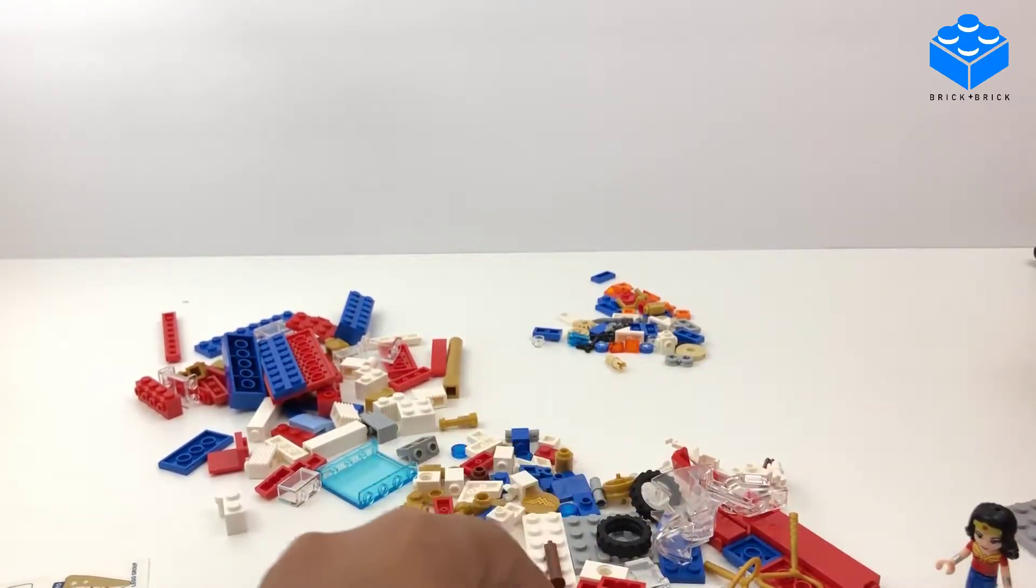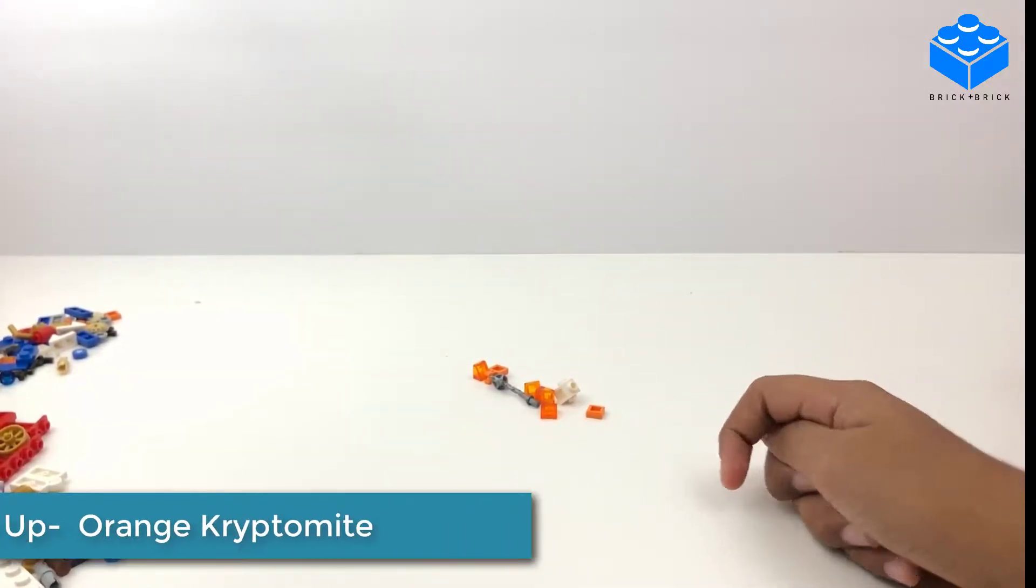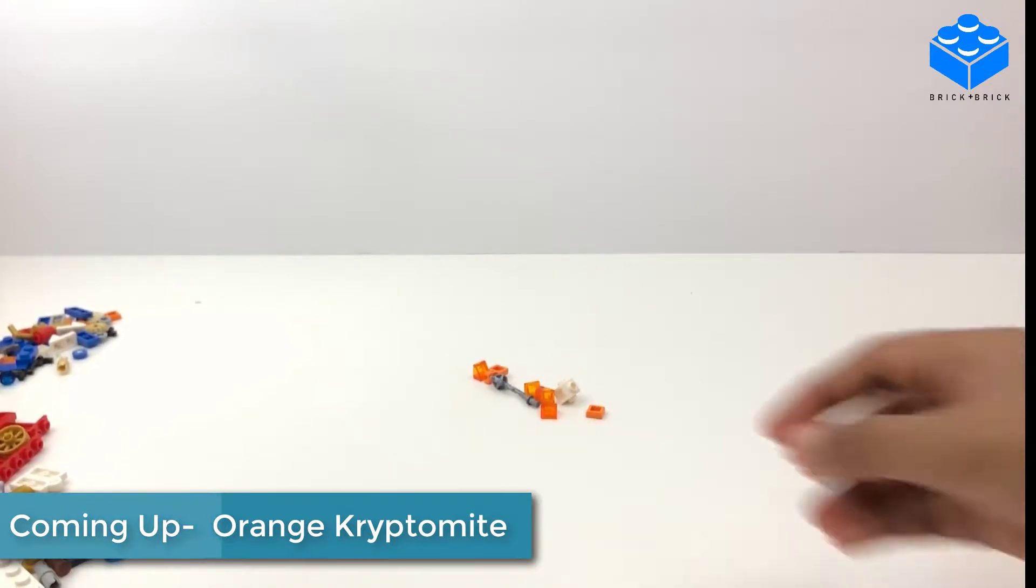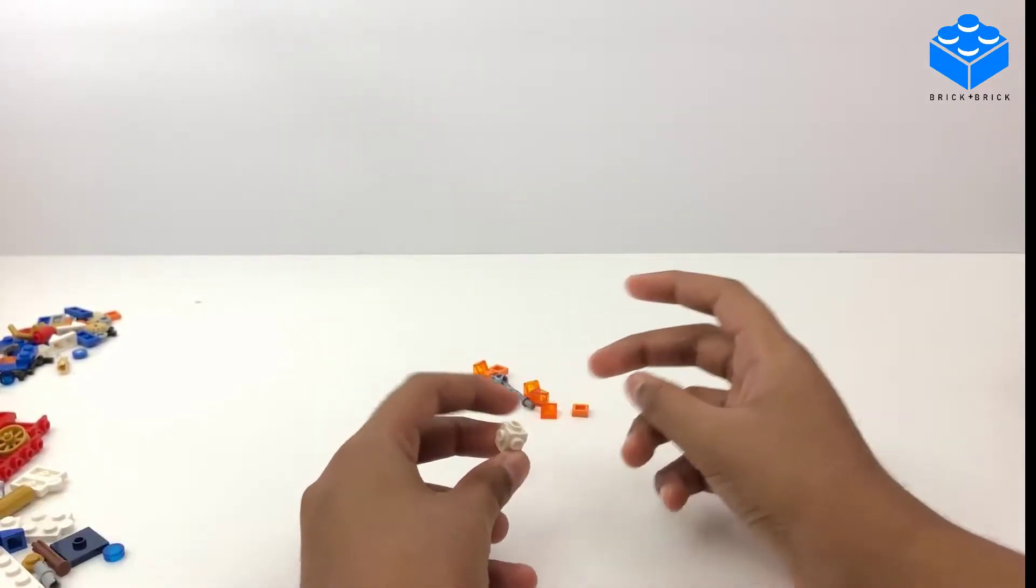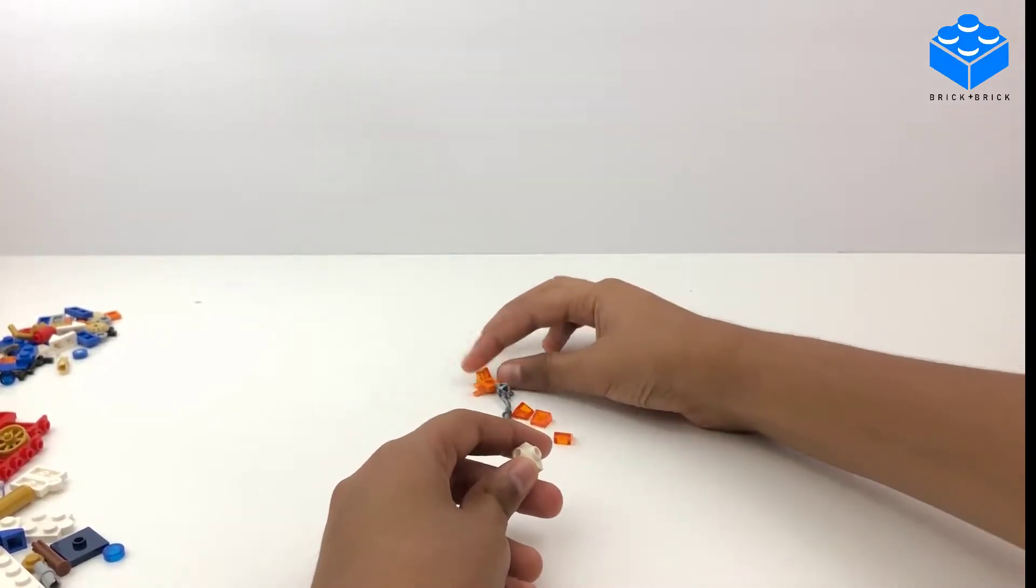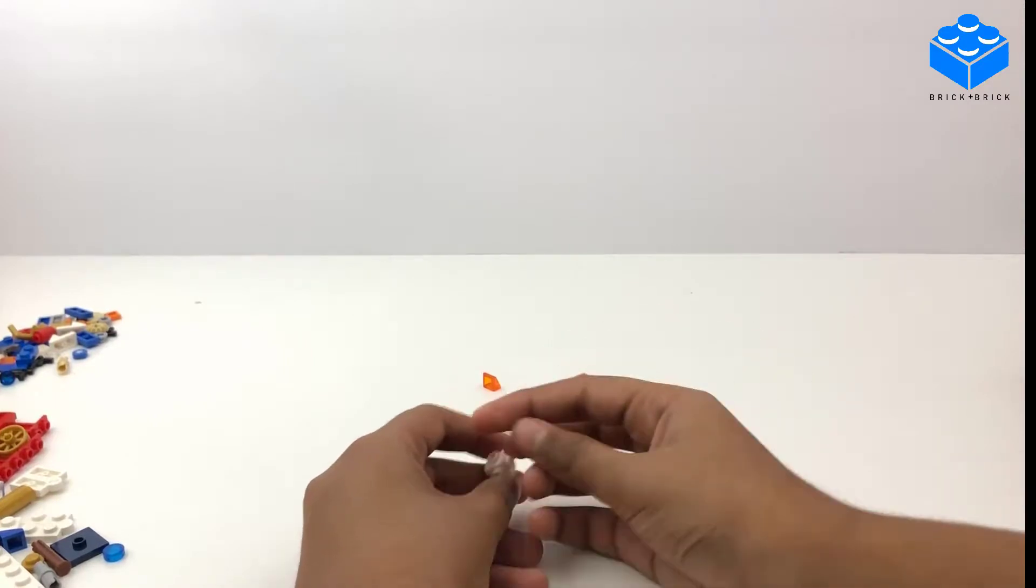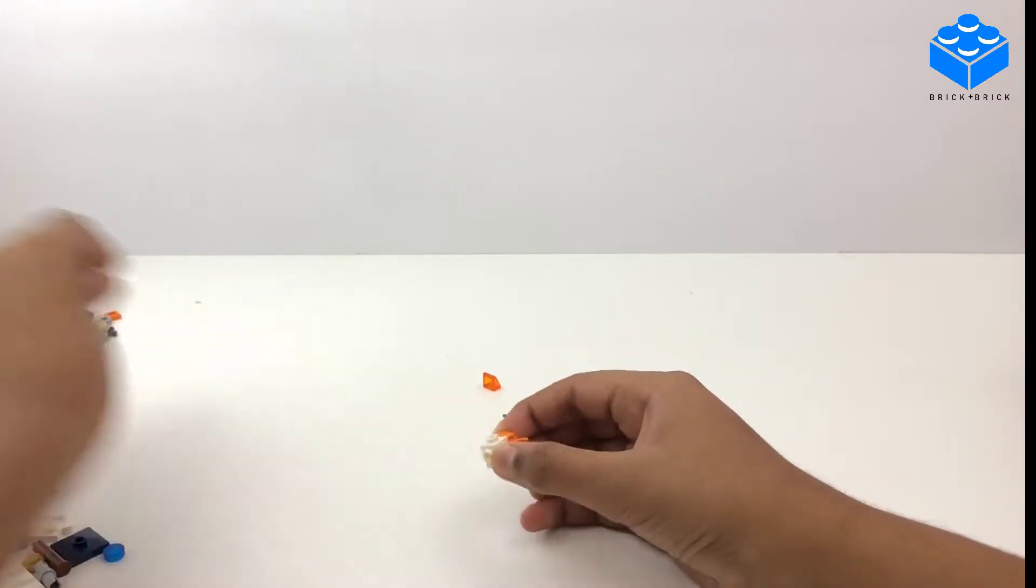So let's put her to the side. Now we're going to build our first thing. First you're going to need all of these pieces I have right here. So grab your four-sided piece, and then attach this to it, and then attach another one of these.